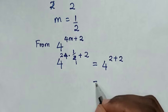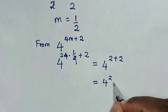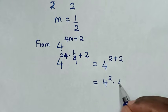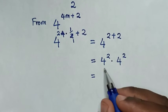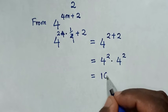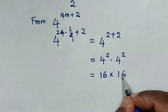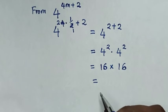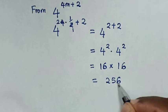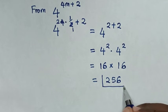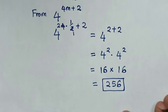Then it will be equal to 4 power of 2 plus 2, which is equal to 4 power of 2 times 4 power of 2. That is 16 times 16, which equals 256. Therefore this is our final answer — the same as the answer in the first method.